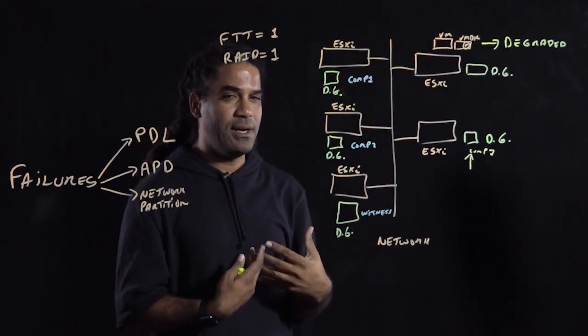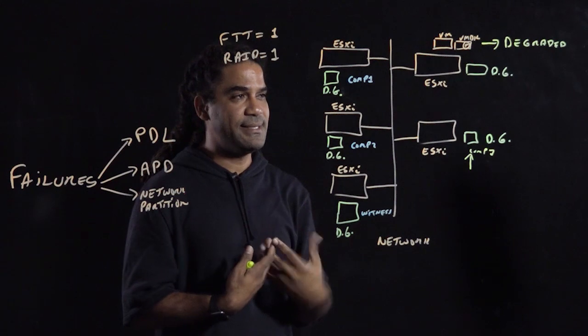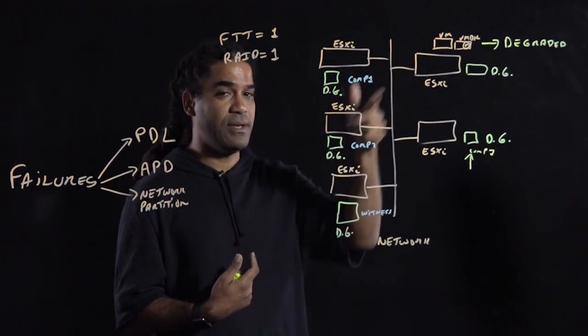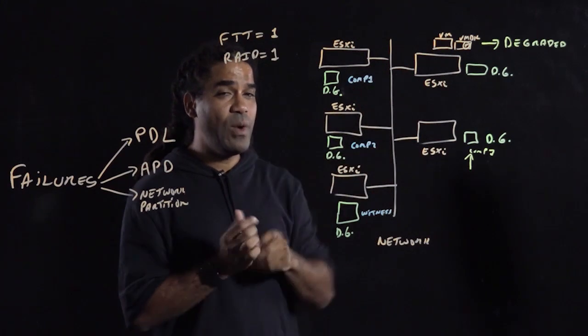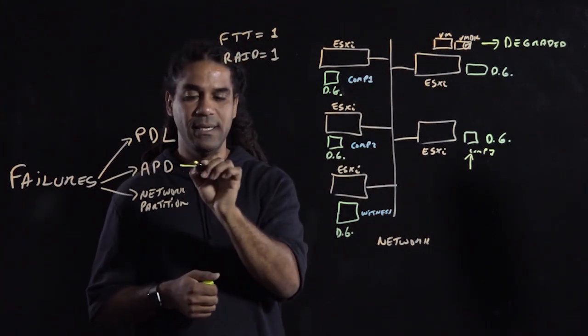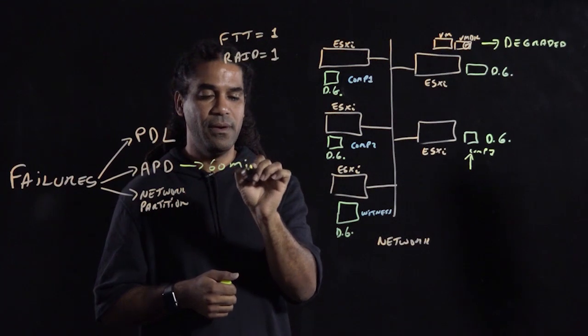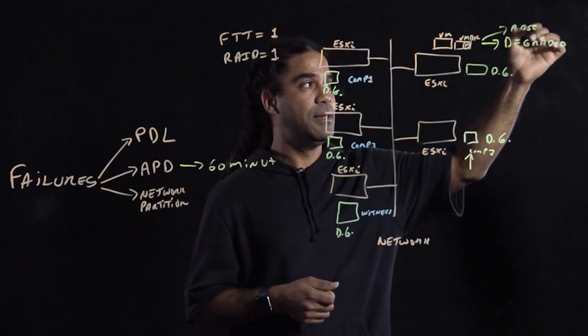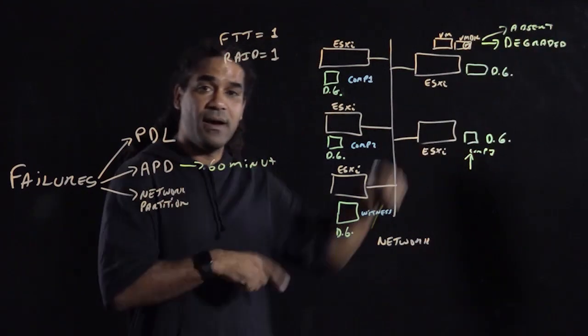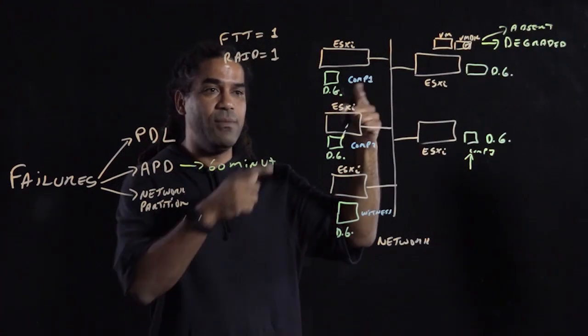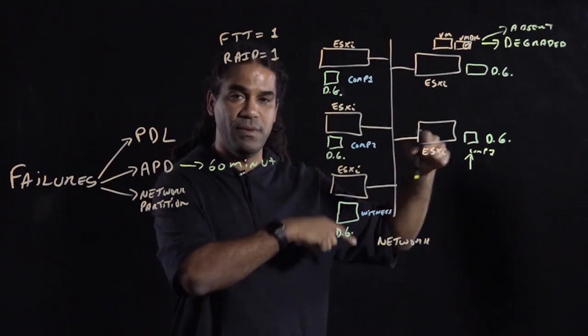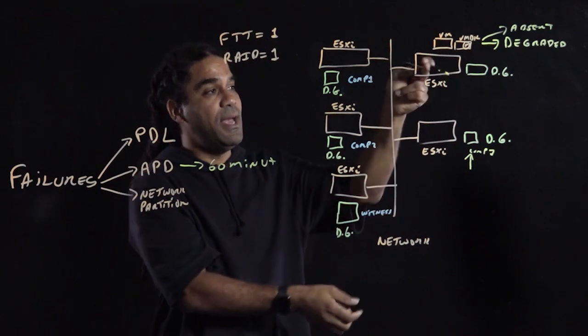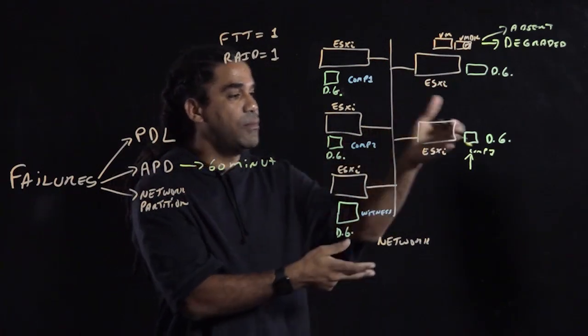So by default, SCSI, the host is going to go, okay, I'm going to wait about five seconds. After those five seconds, I'm going to assume that you are not coming back anytime soon. So I'm going to continue to write over here, right? Right over here. And I'm going to wait 60 minutes by default before I change your policy from absent, right? And I start recovering. And when I start recovering, I will follow the same process I followed before. I will find another candidate to put the component that's missing over there. I will start writing over here, and this guy will start replicating.